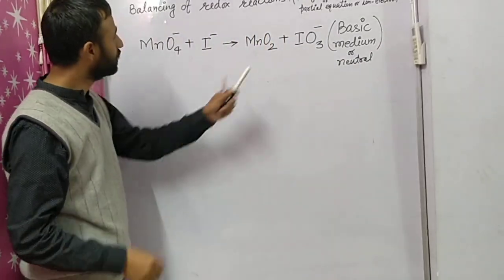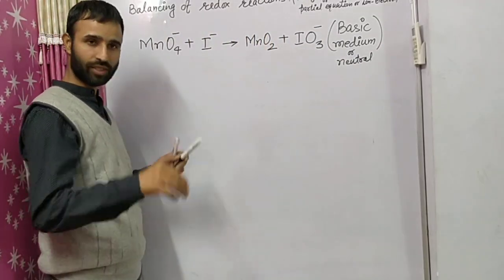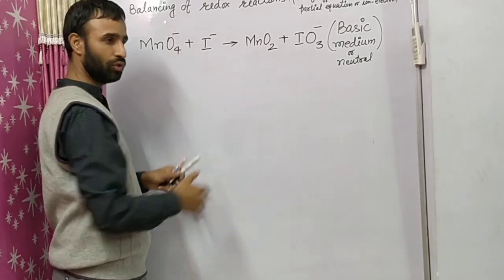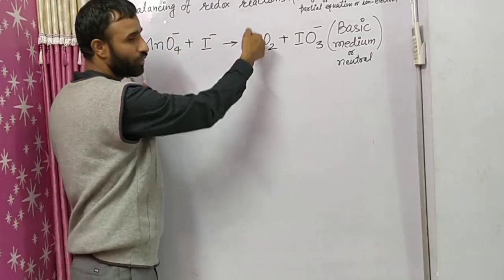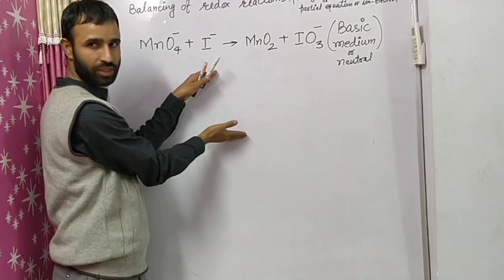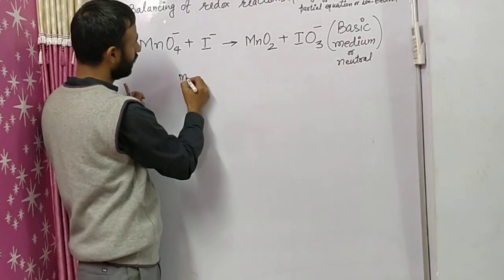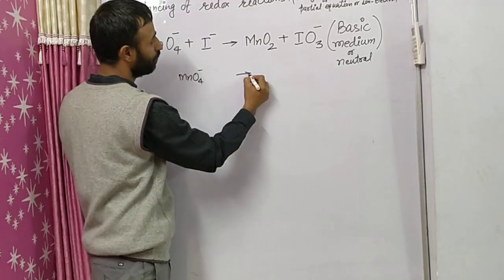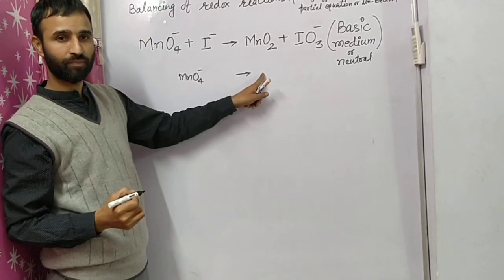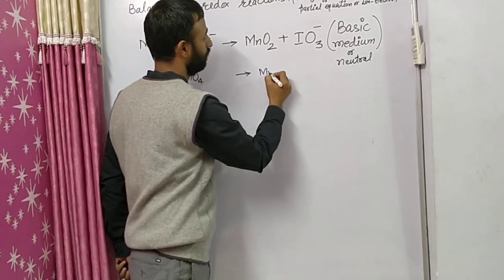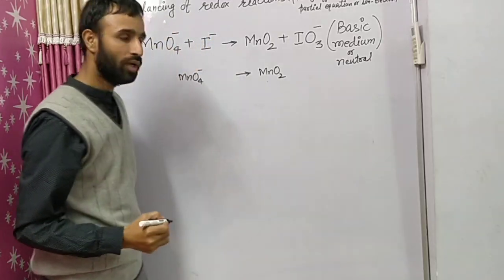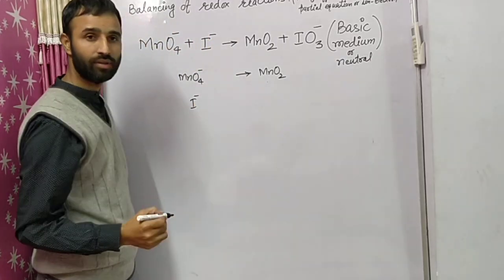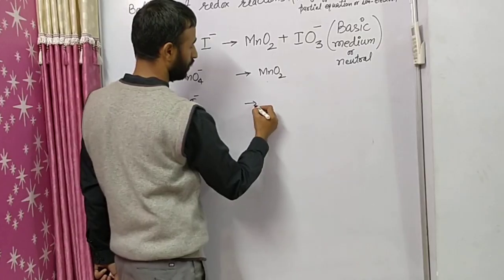In basic medium, the first step is the same — we separate the reactant and product into two half-reactions. First is MnO4⁻ converted to MnO2, and corresponding to I⁻, we have IO3⁻.